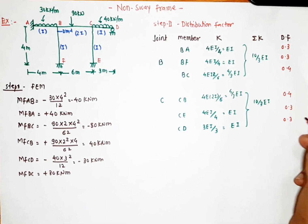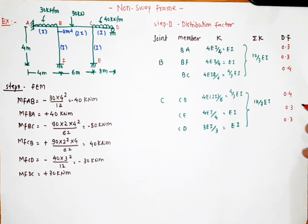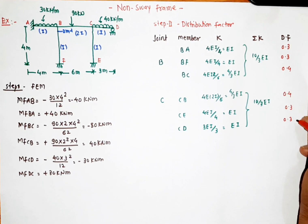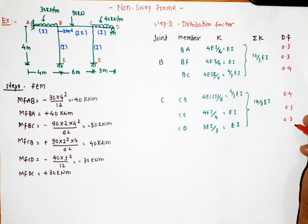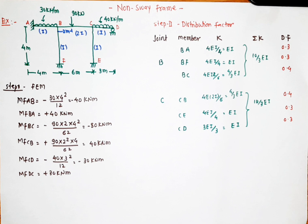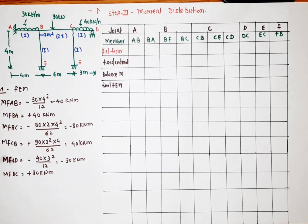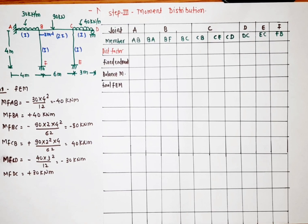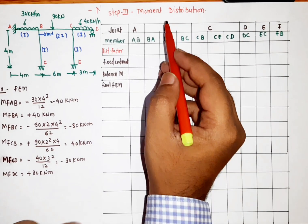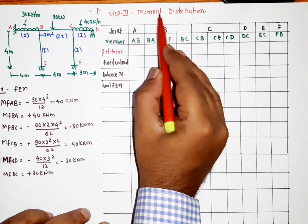When we add the distribution factors at each joint: at B, 0.3+0.3+0.4 = 1, and at C, 0.4+0.3+0.3 = 1. This confirms our calculated distribution factors are correct. After calculation of distribution factors, we proceed to step 3: moment distribution.